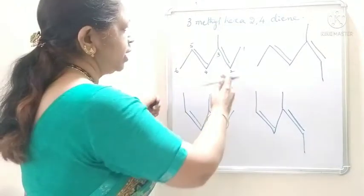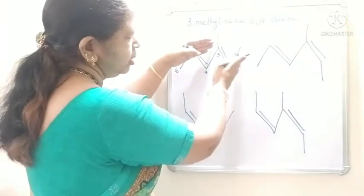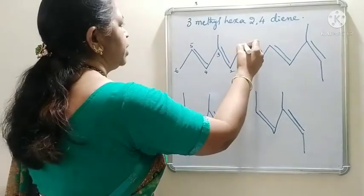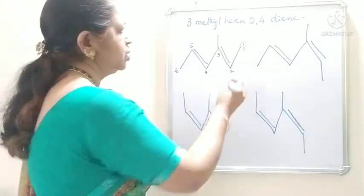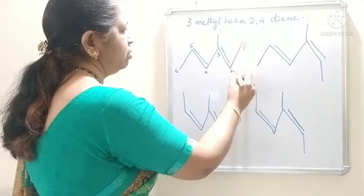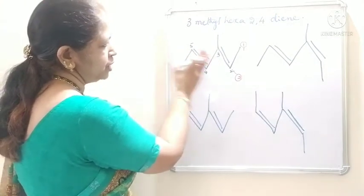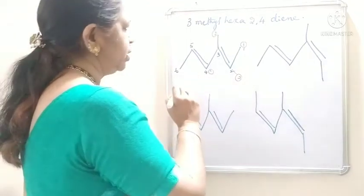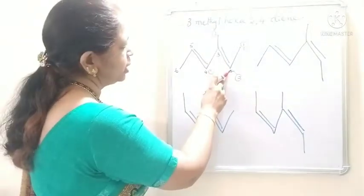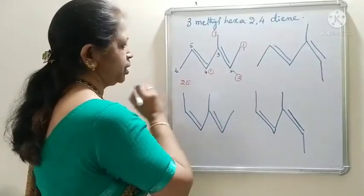If we consider the double bond at the second carbon, the methyl group is lying on the upside — the first priority group will be on the upside. We have to assume that hydrogen is present. Hydrogen will have second priority, and this methyl group and this entire group: this entire group gets the first priority and methyl group gets the second priority. At second carbon, the first priority groups are lying on the opposite side. So, 2E configuration.